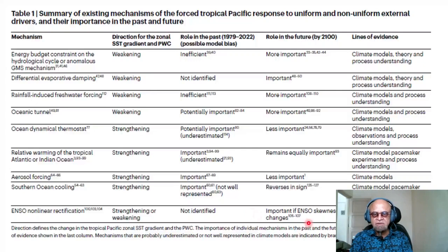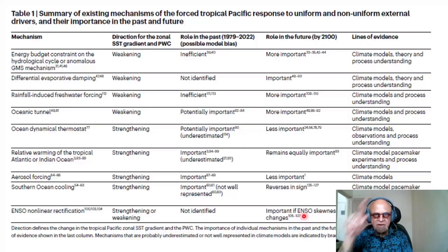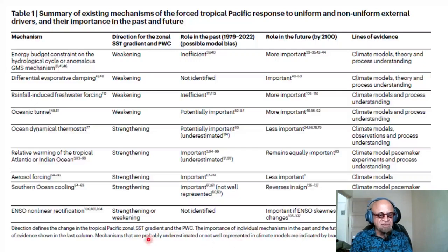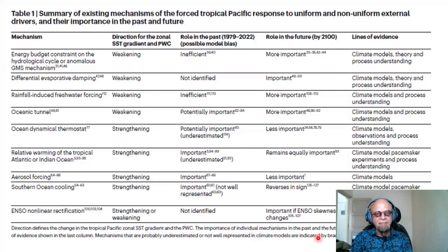ENSO nonlinear rectification — the low-frequency impact of El Niño and La Niña — will be strengthening or weakening depending on what ENSO does, but we haven't understood it in the past yet. Many papers claim to know what will happen to ENSO in the future, but one should be skeptical. This rectification matters if ENSO skewness changes. Climate models and process understanding provide the evidence. Direction defines the change in the tropical Pacific zonal SST gradient and PWC; the importance of individual mechanisms in the past and future was evaluated on the basis of multiple lines of evidence.